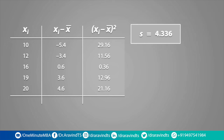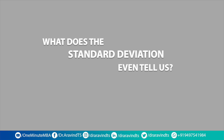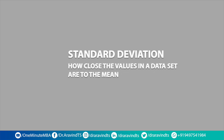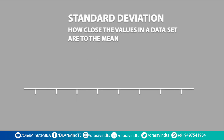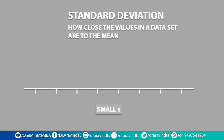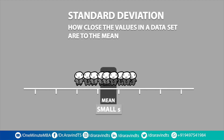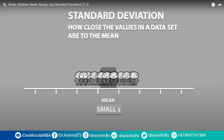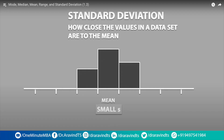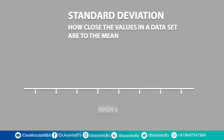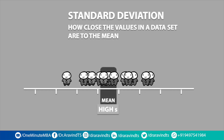Now what does the standard deviation tell us? The standard deviation tells us how close the values in a data set are to the mean. A small standard deviation indicates a small amount of variability — there will be a lot of values closer to the mean, which makes the distribution less spread out. In contrast, a high standard deviation indicates a high amount of variability — there will be a lot more values farther from the mean, which makes the distribution more spread out.